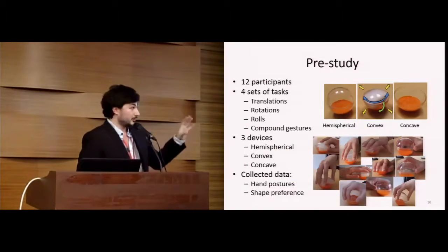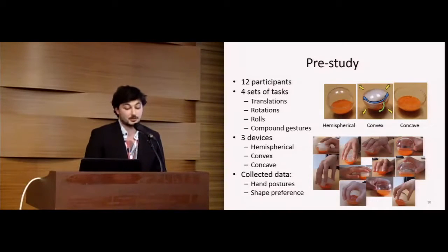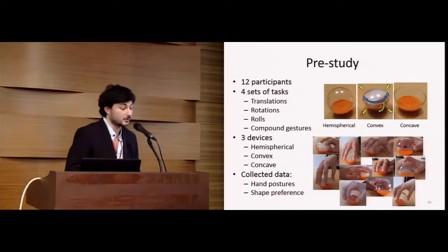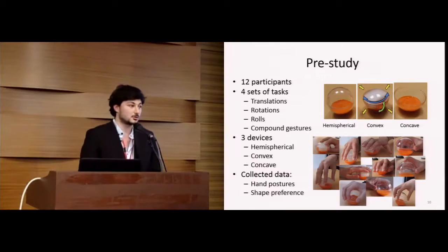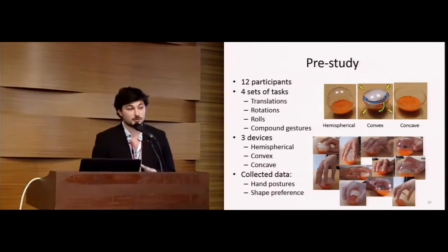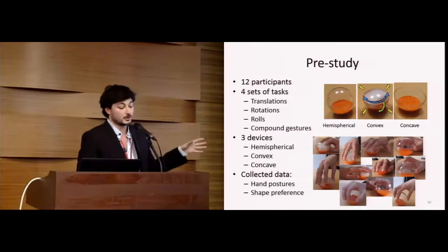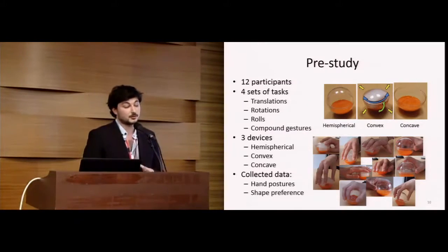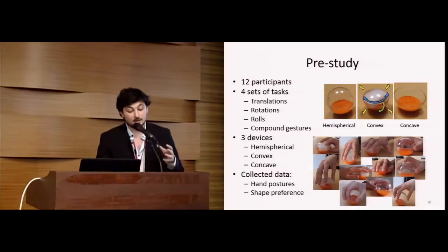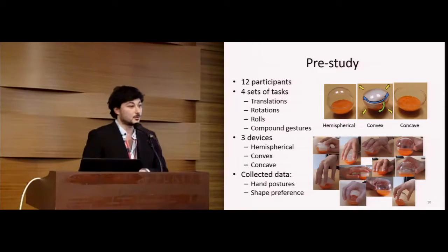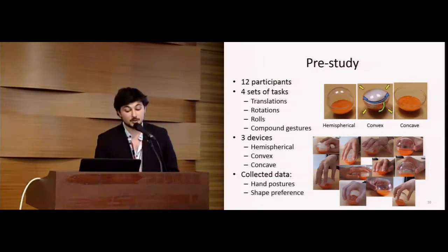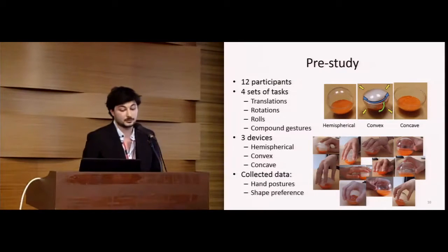We performed a pre-study to answer the design questions. There were 12 participants, all right-handed, which had to perform four sets of tasks: translations alone, rotations alone, rolls alone, and compound gestures. They had to use three versions of the Roly-Poly mouse: a hemispherical one, a convex one, and a concave one. They were totally free to adopt the hand postures they wanted for each set of tasks, and we took pictures each time. We also asked them their preference concerning the shape of the device.